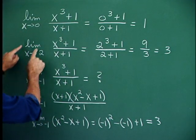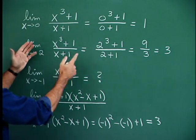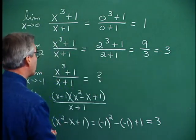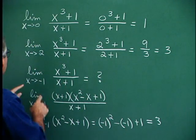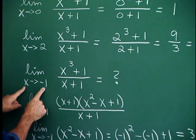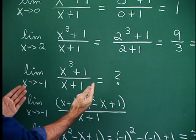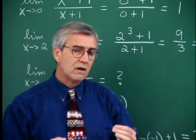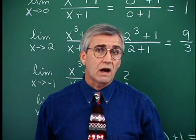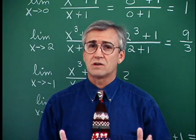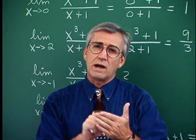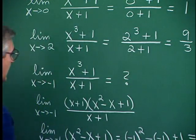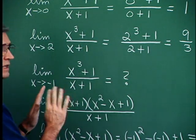The limit of the same function as x approaches 2: replace x with 2 in both places and we find 9 over 3, or 3. But what happens if we're trying to find the limit as x approaches negative 1? Now we run into trouble. It's not categorically true that a discontinuity always causes trouble — we only have trouble if that point of discontinuity is the target point. But there are several ways to deal with it.